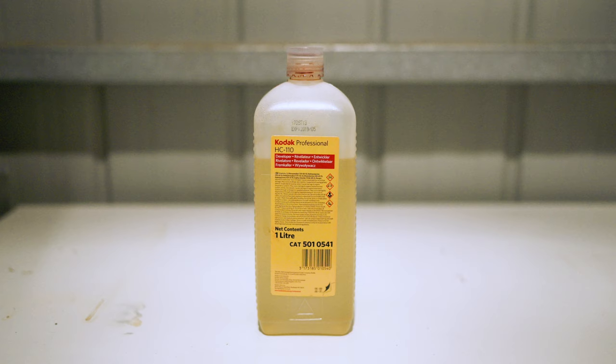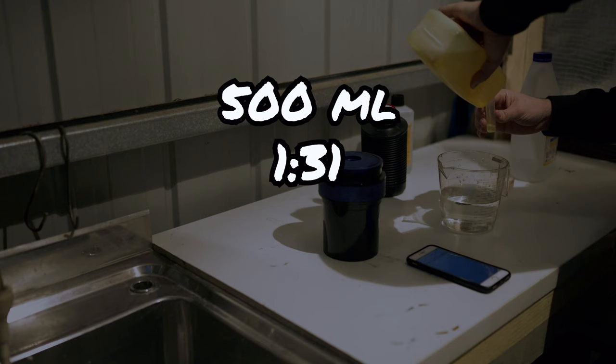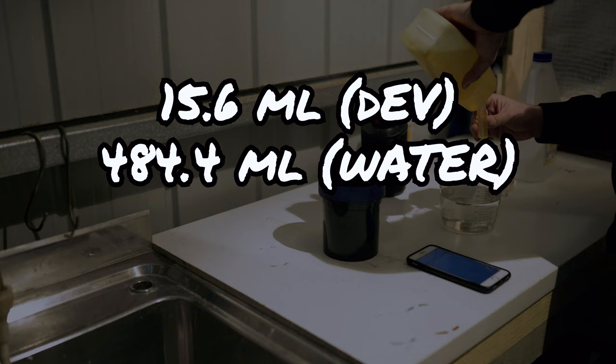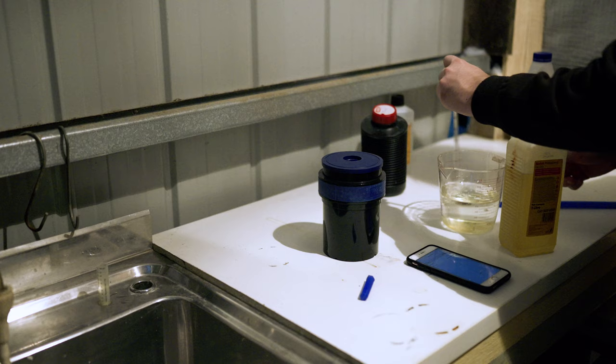The developer that I'm using today is HC110 from Kodak. I love this developer as it has an amazing shelf life and you only use a little bit of it each time you develop. For 500ml of solution at a 1 to 31 ratio, I've got to mix in 15.6 mls of developer with 484.4 milliliters of water. Now if you're bad at maths, I just use this tool which is massive dev chart which basically tells you exactly what to do. So it's pretty simple. Makes it a lot easier in the darkroom. Make sure you mix in your solution as well with the water.